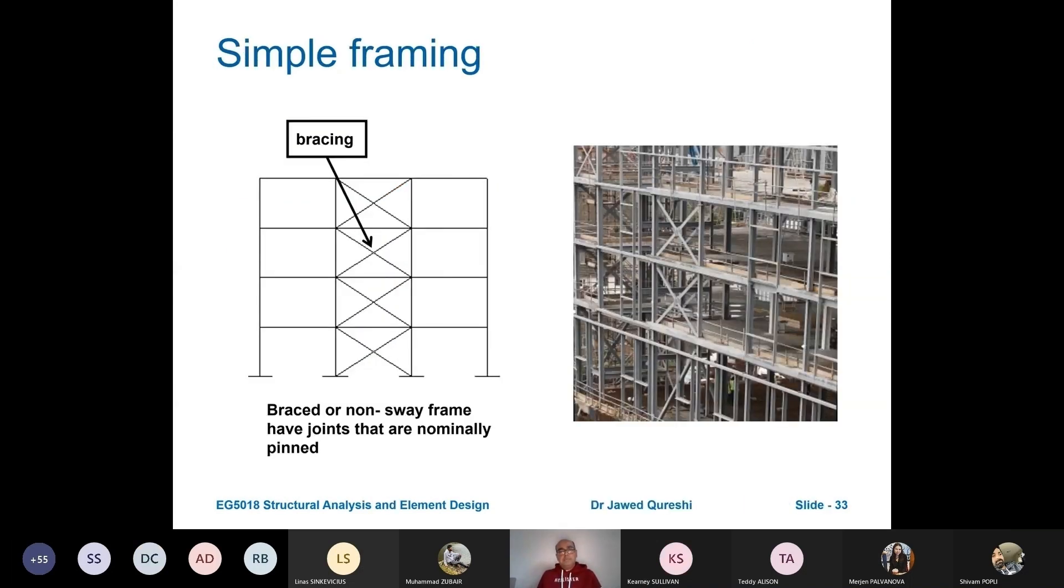There are two types of frames. One type of frame is braced or non-sway frame where joints are pinned, which means that they don't transfer any moment from the members to the columns. Others are moment frames.